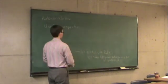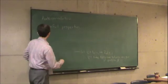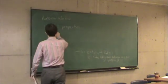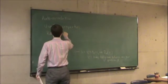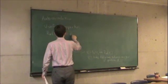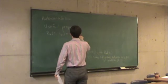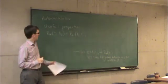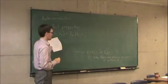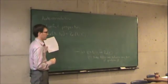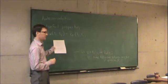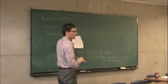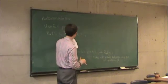What else can I say about this? Given that definition, for one thing, Rx of T1, T2 is equal to Rx of T2, T1. That's because what is Rx of T1, T2? It's the expected value of x of T1 times x of T2. Because multiplication is commutative, I can just reverse the order and that shouldn't affect anything.